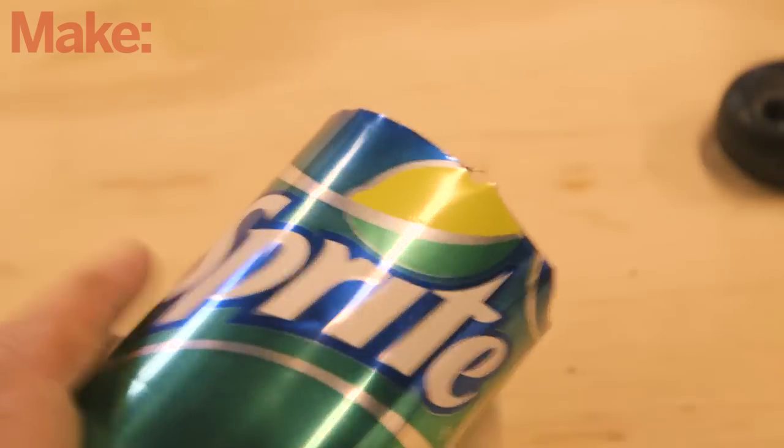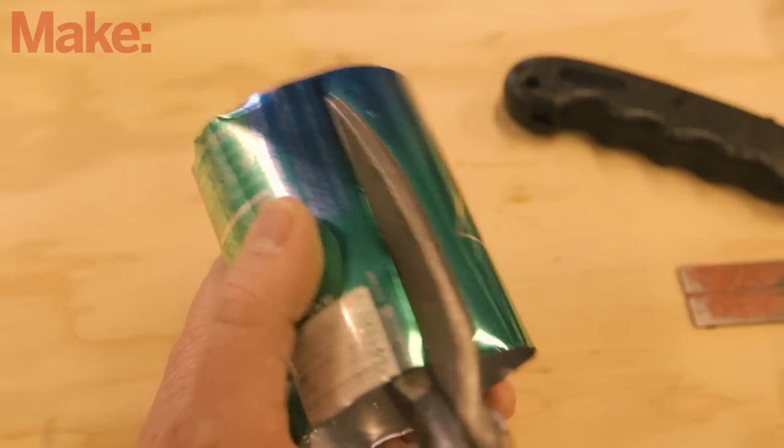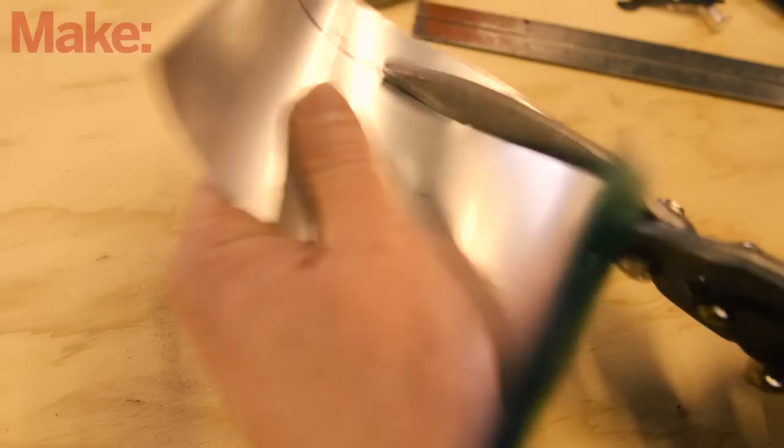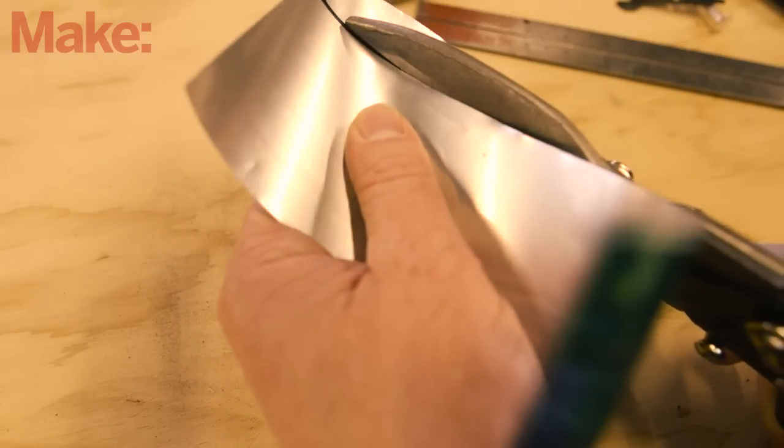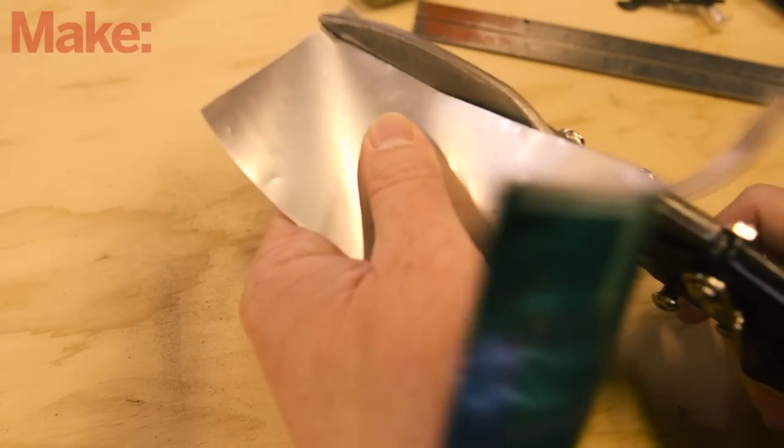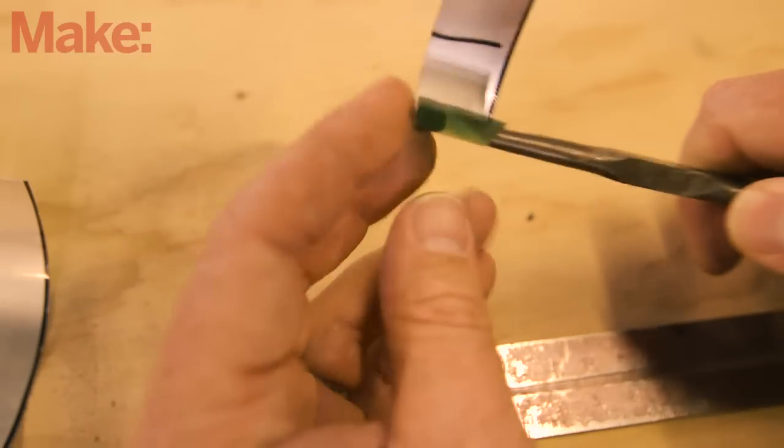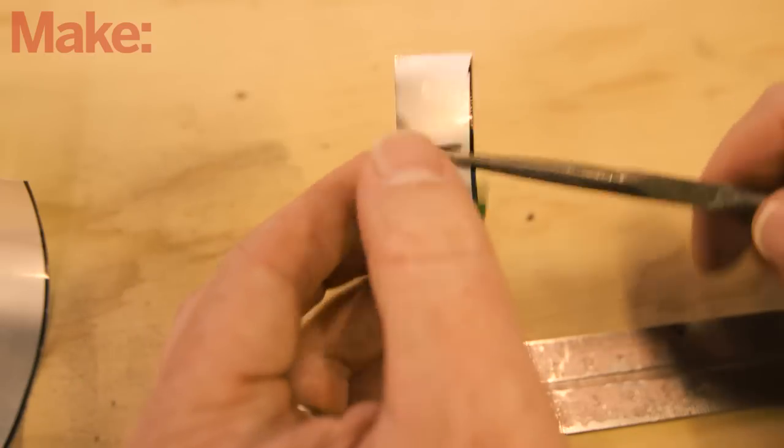Cut the top and bottom from a soda can and split the remaining aluminum from top to bottom. Cut one 1.8 centimeter strip crosswise and another 6.5 centimeter wide strip. Fold the 1.8 centimeter strip into three sections, each one 2 centimeters long.